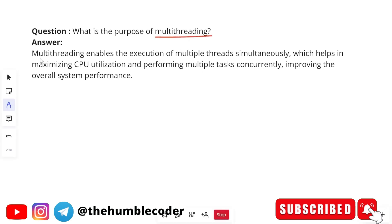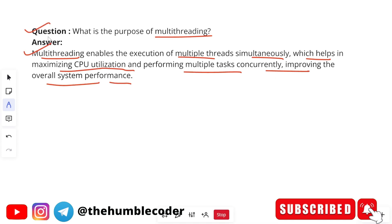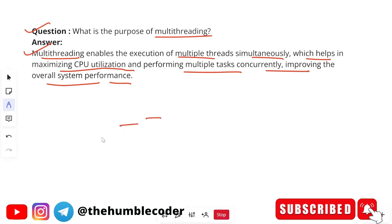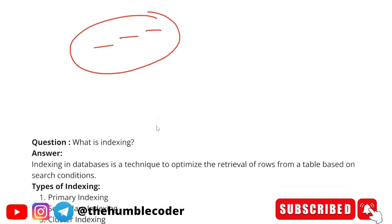Next question: What is the purpose of multi-threading? Multi-threading enables the execution of multiple threads simultaneously, which helps in maximizing CPU utilization and performing multiple tasks concurrently, improving overall system performance. When one thread of a task is executing and it goes on hold, other tasks can run — so multiple tasks can perform concurrently. Without multi-threading, one task would complete and then the next would start, which is very time-consuming.